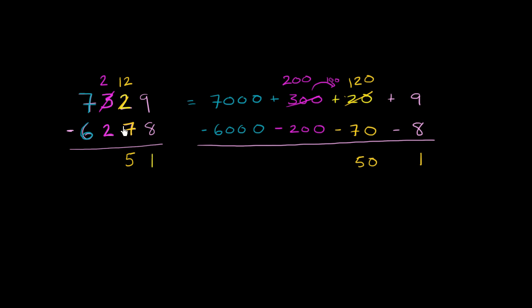And then we can go to the other places. You say 2 minus 2, that's 0 hundreds. And then 7,000 minus 6,000 is 1,000. Right over here, 200 minus 200 is 0 hundreds, and 7,000 minus 6,000 is 1,000.